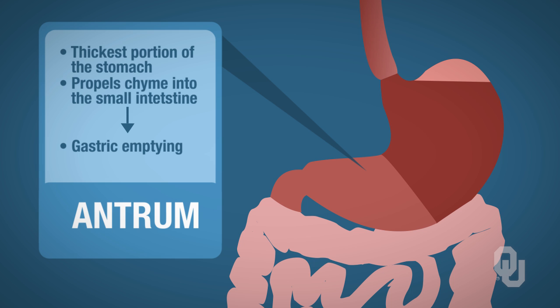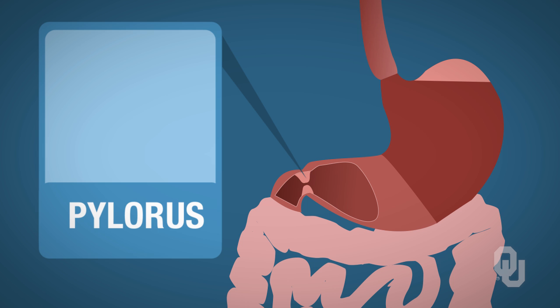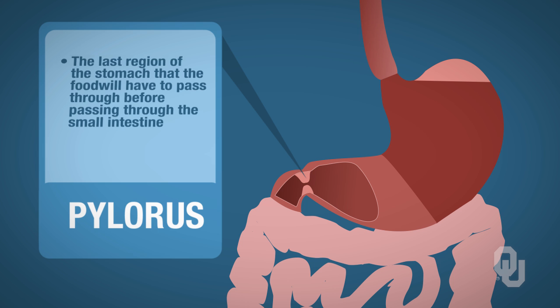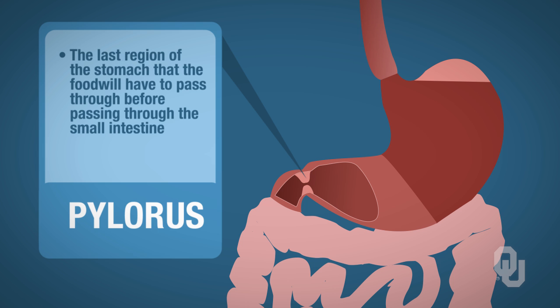There is one more section of the stomach not yet listed: the pylorus. This is the last region of the stomach that food passes through before entering the small intestine.